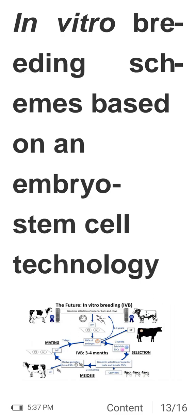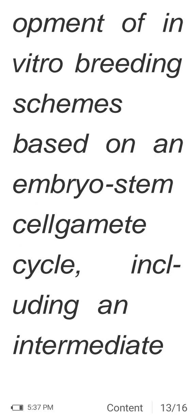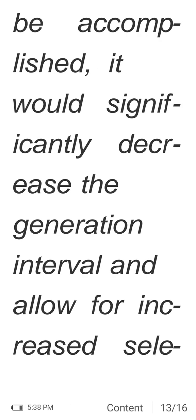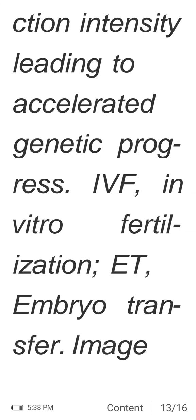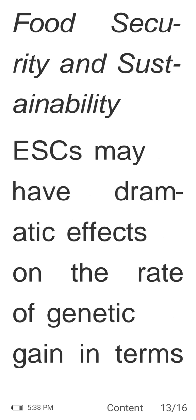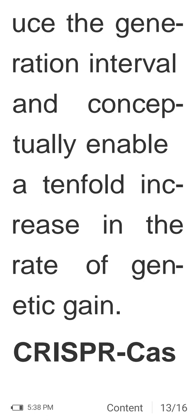In vitro breeding schemes based on spermatogonial stem cell (SSC) technology may have dramatic effects on the rate of genetic gain, reducing the cattle generation interval from 2–3 years to 3–4 months — offering a way to achieve a tenfold increase in the rate of genetic gain.